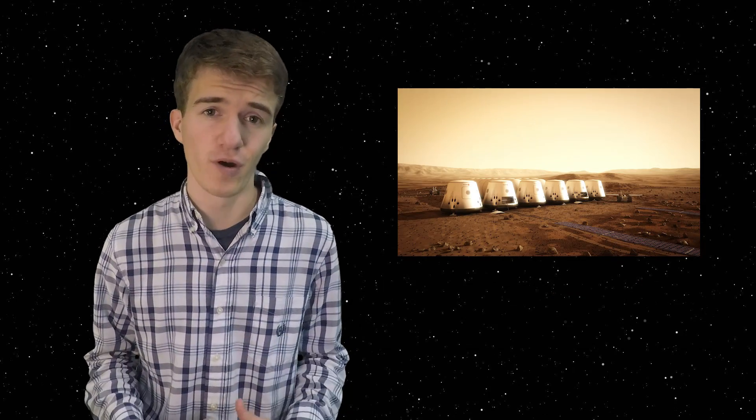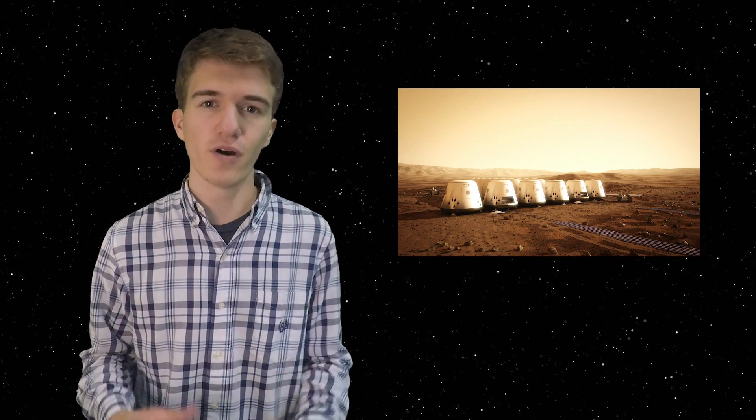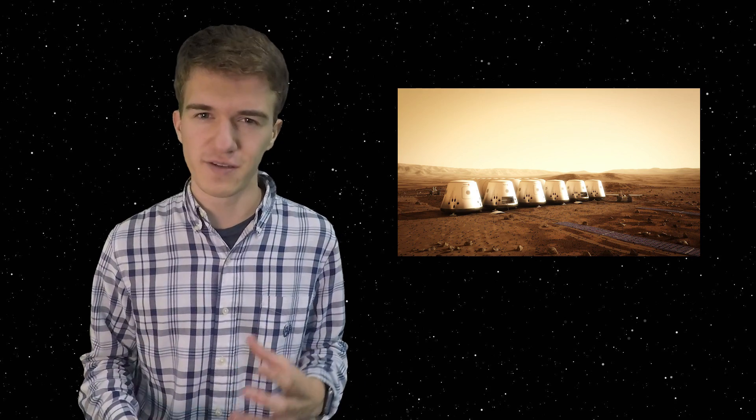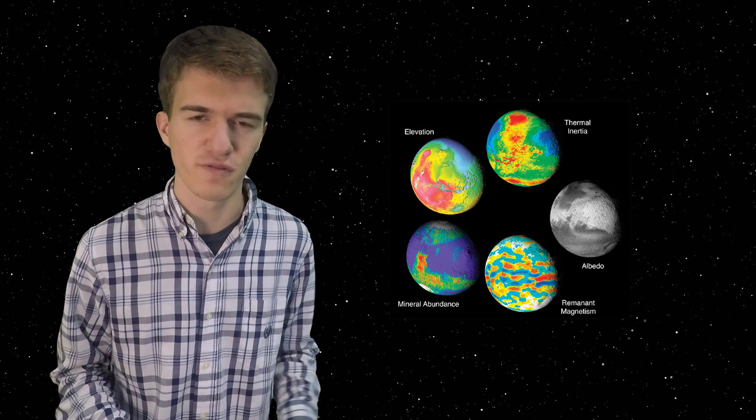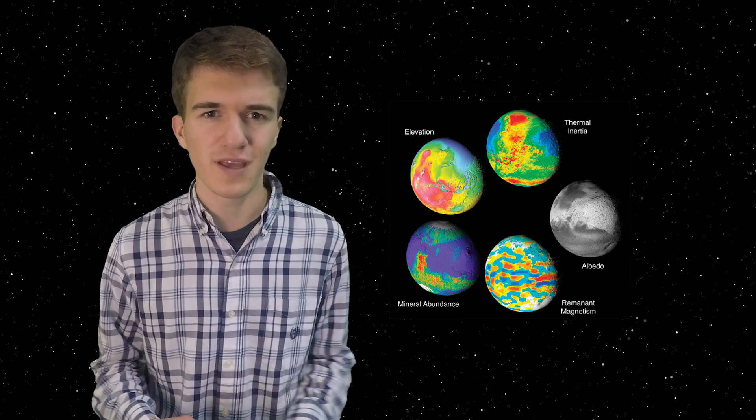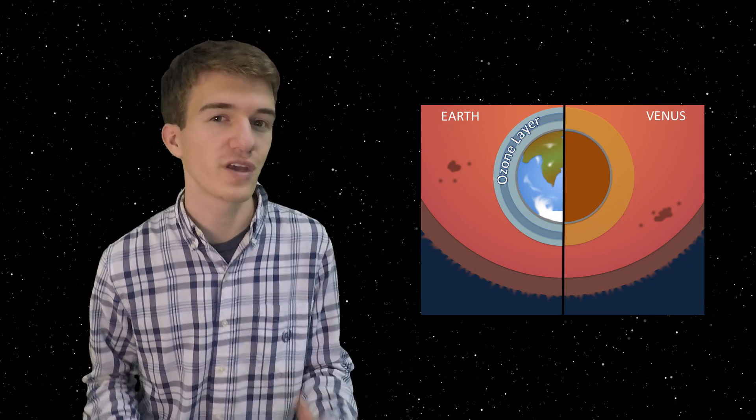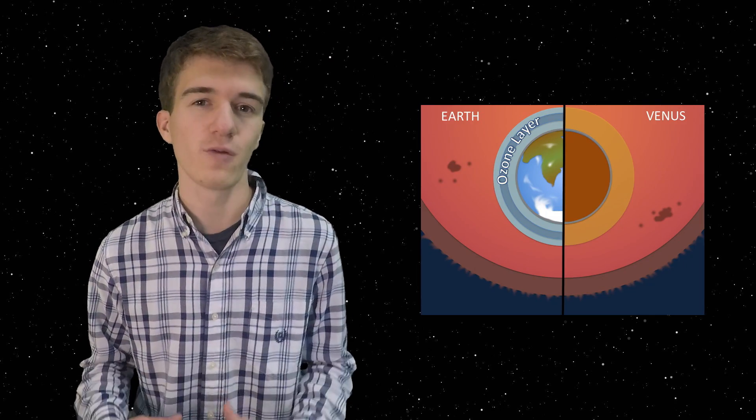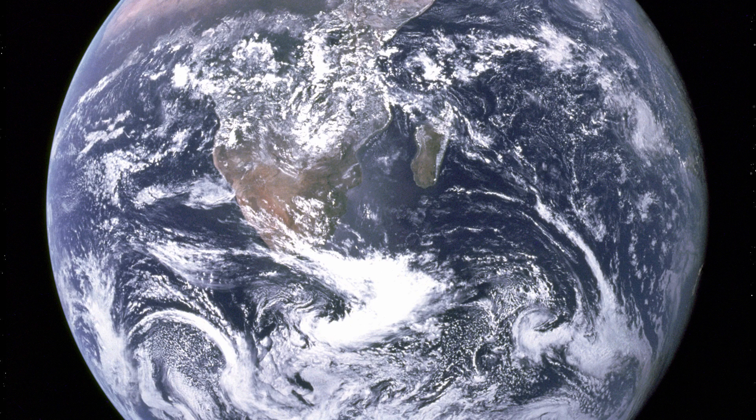In the process of understanding and researching the ability to terraform Mars, we not only show a possibility that we could live on Mars as a human race, but also understand more about how planets evolve, how their atmospheres change over time, and how we could possibly even fix our own if it went into a case such as Venus, where it got too big, or Mars, where it got too small. Doing this research and looking into these options is one main way where we could even help our own planet.